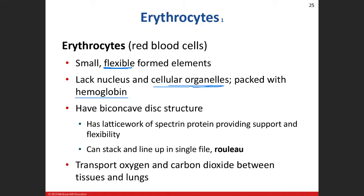Pretty much the entire red blood cell is made up of hemoglobin — about 280 million hemoglobin molecules per red blood cell. Each molecule can bind four oxygen molecules, so that's a tremendous capacity for carrying oxygen.